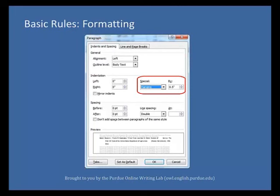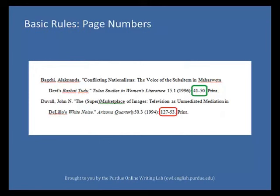Each entry should have a hanging indent, which means that the first line of the citation is flush with the left margin, and the second and subsequent lines are indented five spaces. To create a hanging indent, open the paragraph menu in Microsoft Word. In the indentation menu under Special, select Hanging.